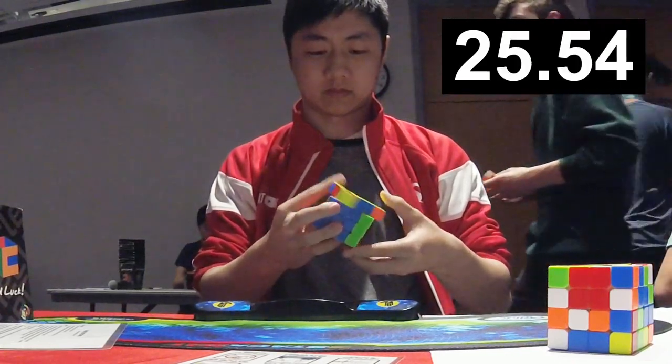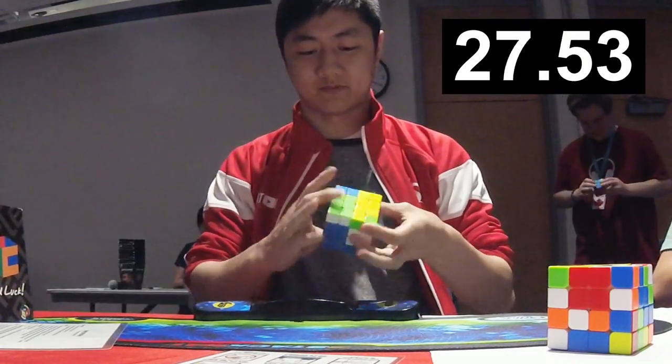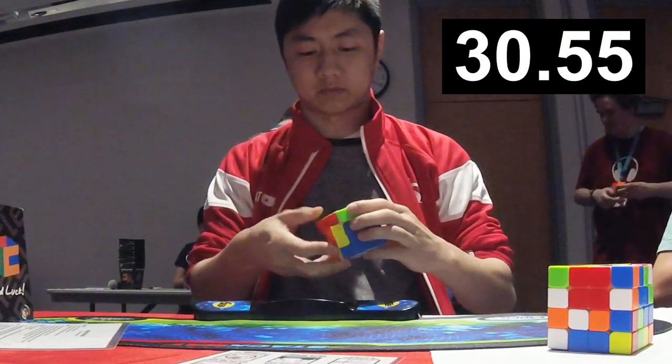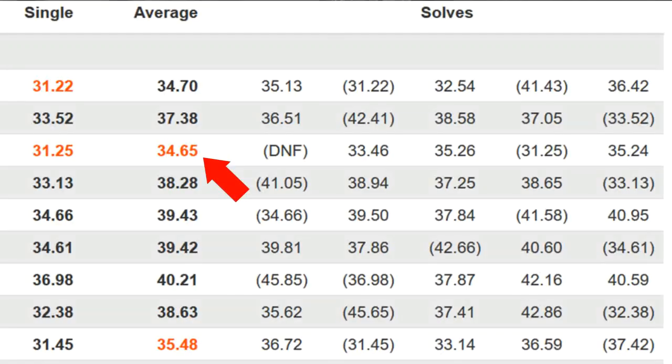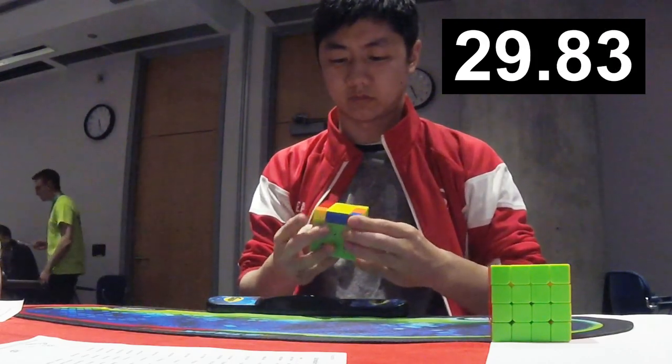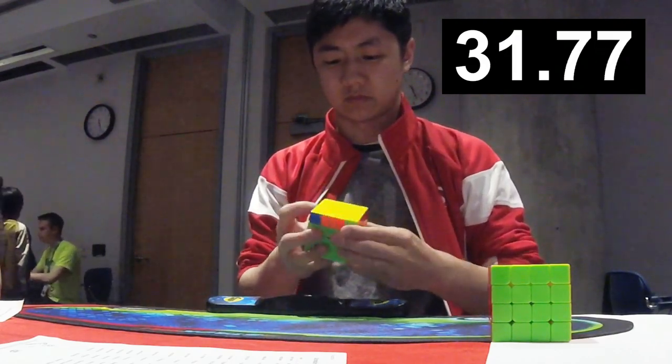And I'm sure I got lucky, I didn't count how many parities I got, but maybe it was also partially due to the fact that I was more used to the Valk 4 after the first round because I was starting to feel more confident on it. And so my previous best average in competition was 34.65 and this average was a 34.70, which is really sad once you look at what happened on the last solve.